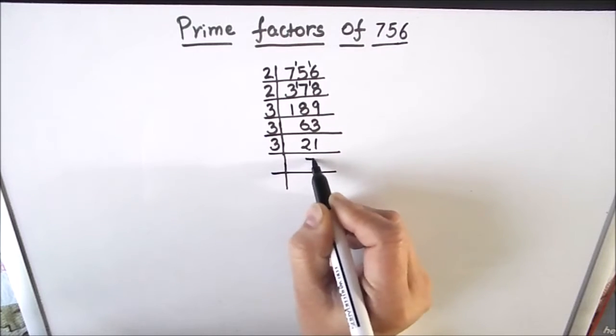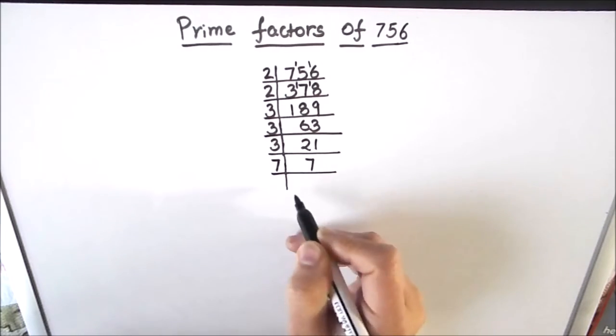And 7 is a prime number, it is only divisible by number 7. 7 times 1 is 7.